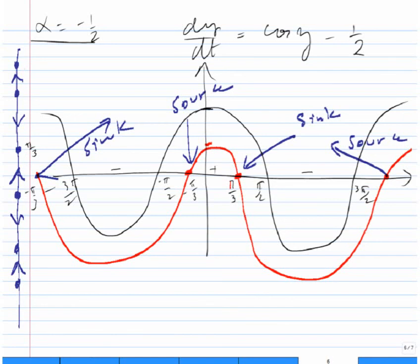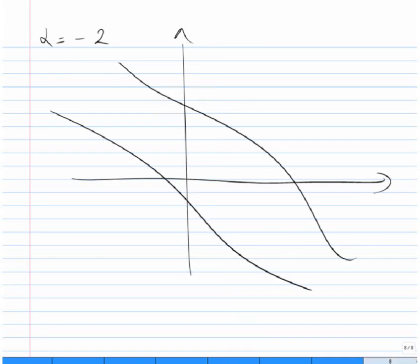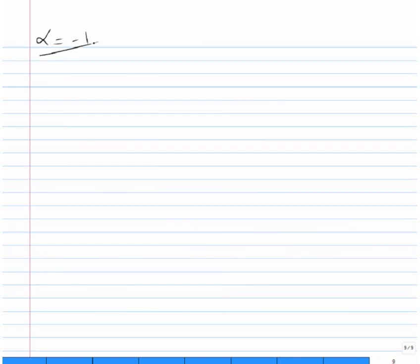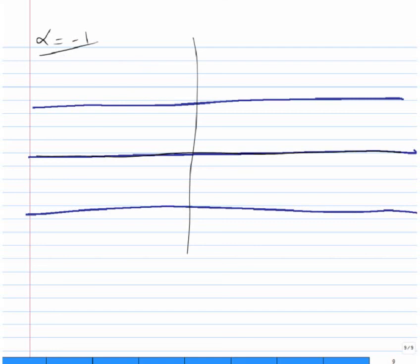The last part asks us to draw solution curves. For α = -2, there are no constant solutions and all solutions are going down all the time.